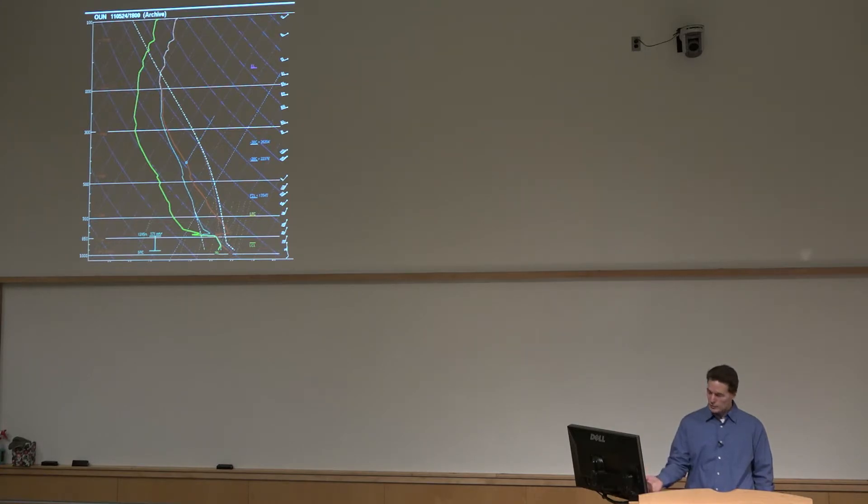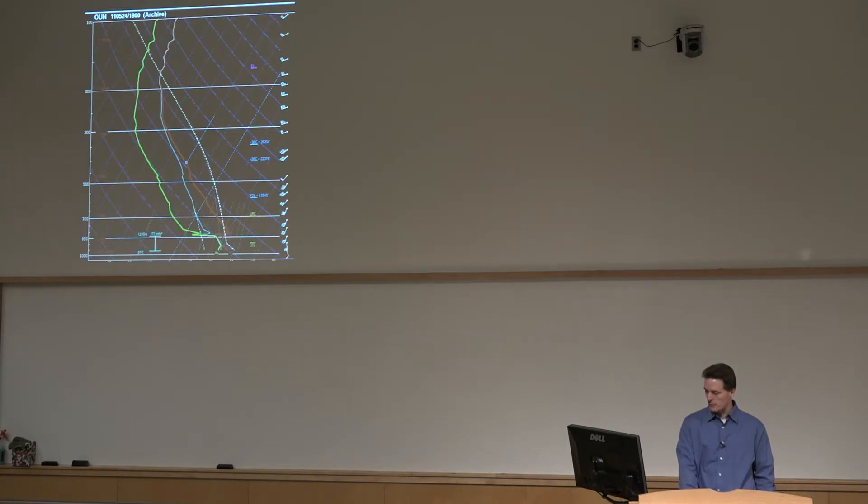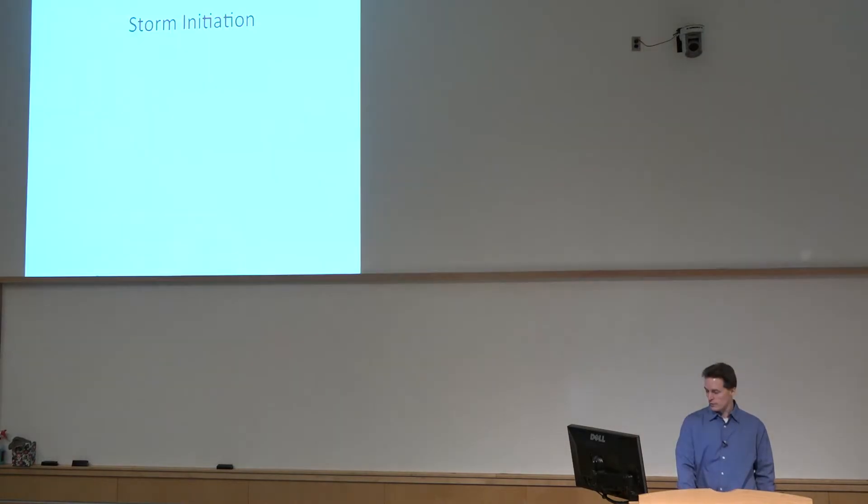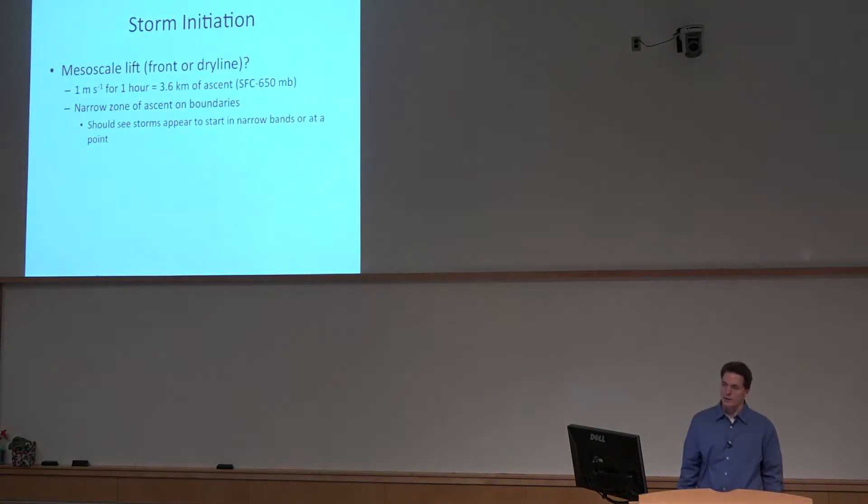So if we're going to get storms to the immediate west of here, it's not like QG processes that are driving it in this case, because we don't see the modification, we didn't see the moistening. This moist layer should be deepening with time. You should see that change and there are times where you can see soundings change like that. This one doesn't show it. So what's actually going on? It's the mesoscale band of ascent along the dry line.